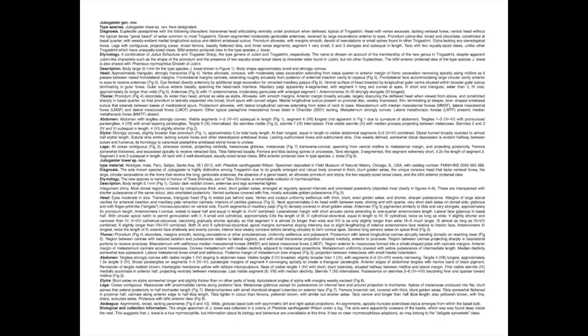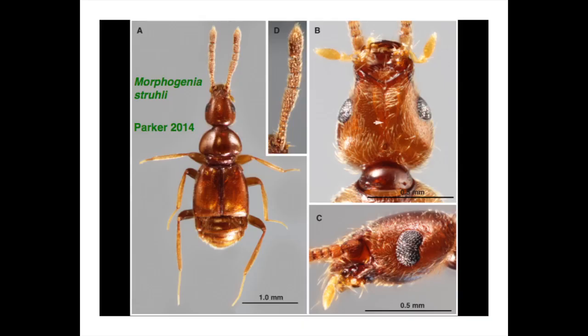Using montage imaging you can get really cool pictures of very small organisms. This is my description of Jubogaster — it's 1,752 words. Compare that to Linnaeus, which is just 12 words. By reading this text, you'd have a pretty good idea of how Jubogaster looked, even without seeing the montage images.